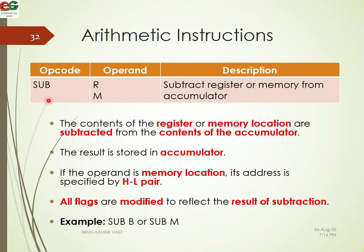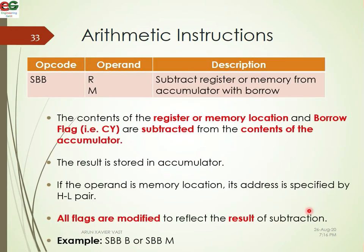For subtraction, the SUB instruction subtracts the content of a register from the content of the accumulator. The result is stored in the accumulator and all flags are modified to reflect the result. According to the result, flags will be set or reset — for example, we can check the sign flag to determine if the result is negative or positive.